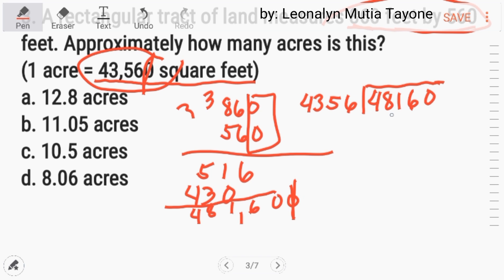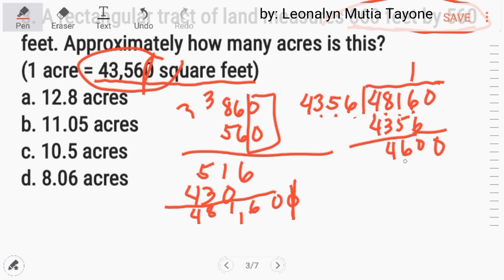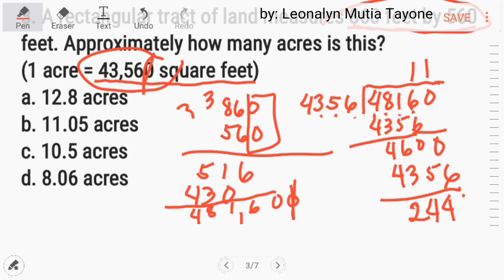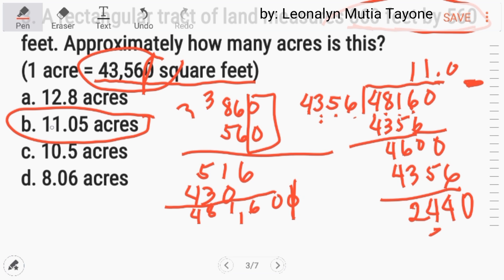Continuing the division: one, two, three, four — and checking further, the remainder is less than the divisor. We don't need to compute further because among the choices only one answer is eleven. So the answer is eleven point zero five acres. Letter B.